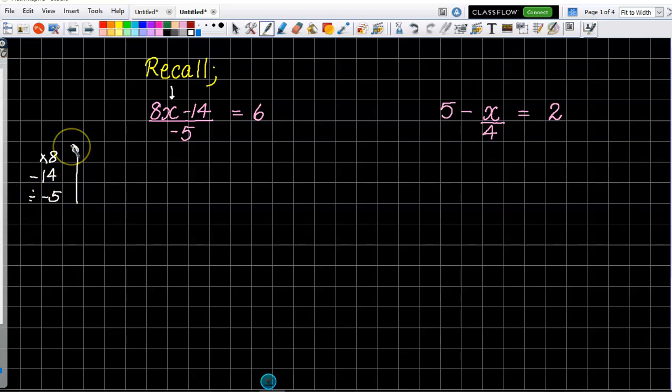So that is the first thing that we have to undo. So how do I undo a divide by negative 5? You times, and you do that to the other side. So we end up with 6 times negative 5. Are we happy with that?